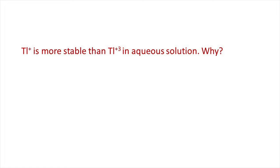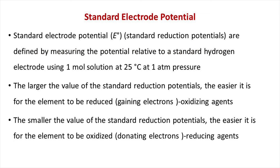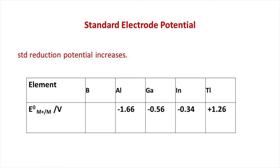The next general property is standard electrode potential, defined by measuring the potential relative to a standard hydrogen electrode using a one mole solution at 25°C at one atmosphere pressure. A larger value of standard reduction potential means it is easier for the element to be reduced, i.e., they are oxidizing agents. A smaller value means it is easier for the element to be oxidized, i.e., they are reducing agents. Standard reduction potential increases on moving down the group.